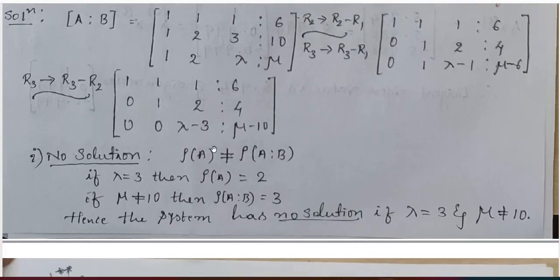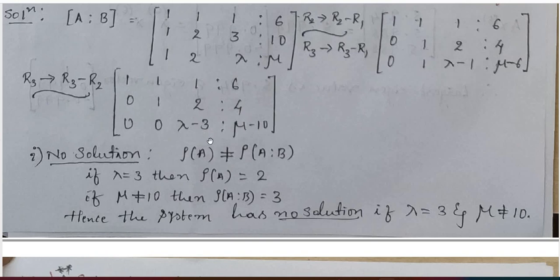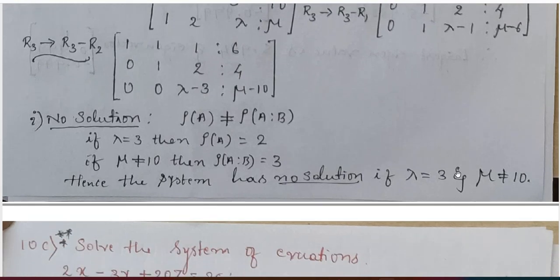From this matrix, I will define the no solution case. We say there is no solution when rank A is not equal to rank of the augmented matrix. If lambda equals 3 and mu is not equal to 10, then rank A equals 2 and rank of the augmented matrix equals 3. Since 2 is not equal to 3, we have no solution. Therefore, for no solution, lambda should equal 3 and mu should not equal 10.